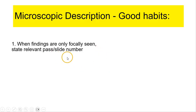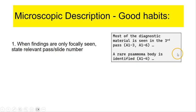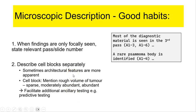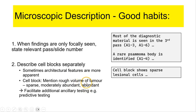Good habits: when findings are only focally seen, it is helpful to state the relevant pass and slide number — for example, most of the diagnostic material is seen in the third pass, or a rare psammoma body or focal finding is identified in a particular slide. This really facilitates review for multidisciplinary team meetings. I also tend to describe the cell blocks separately from the smears, because some architectural features are more apparent in the cell block, and I find it useful to give a rough indication of the volume of lesional tissue — whether sparse, moderately abundant, or abundant — to help inform the oncologist for additional downstream ancillary testing.